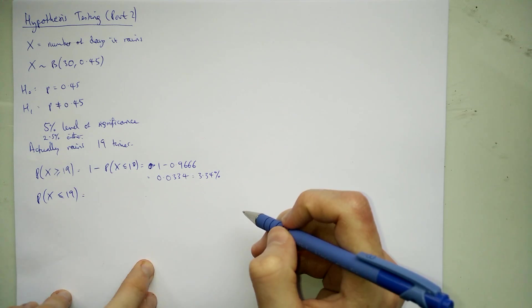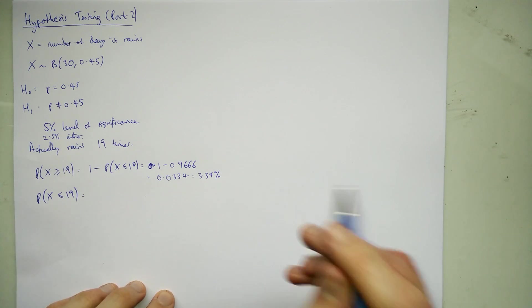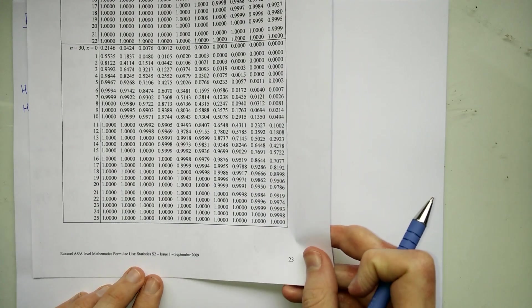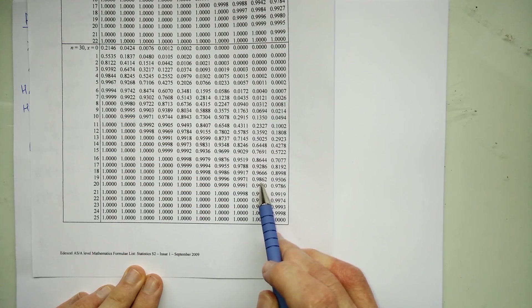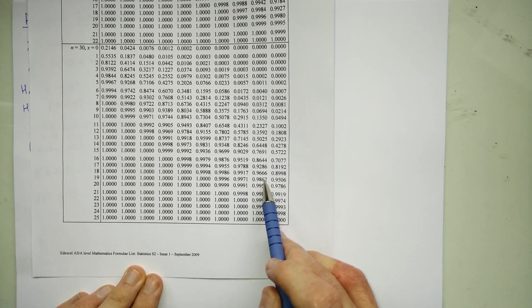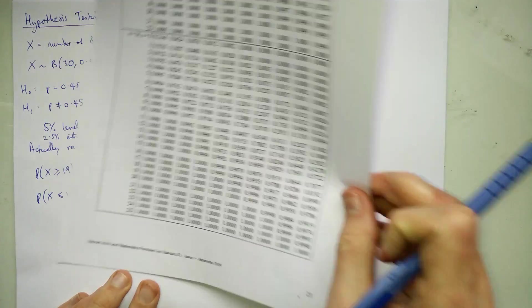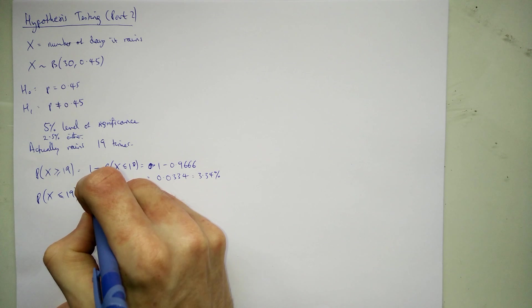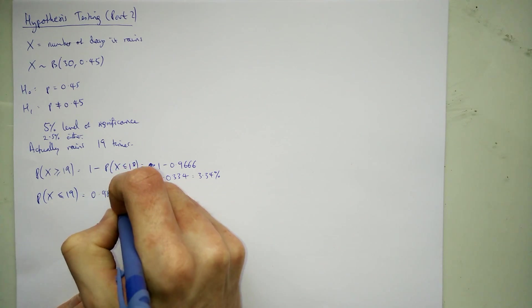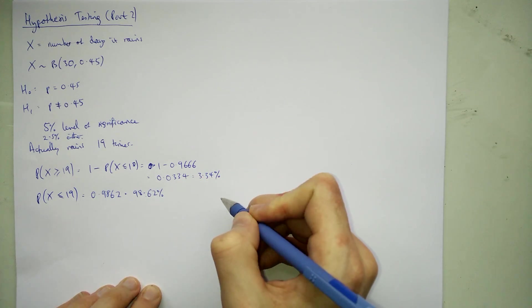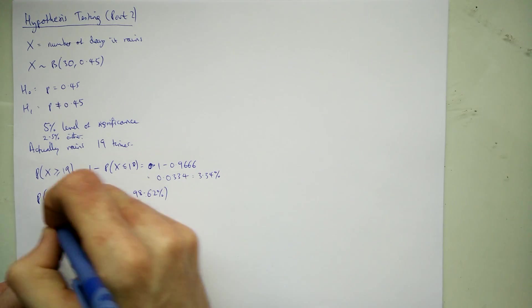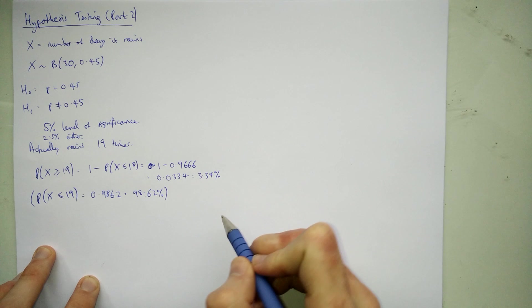More likely then that probability is 0.45 and we've got less than 19 because less than 19 is a straight look up. Back to the table. N is 30 down to 19 across to 0.45 and 19 is 0.9862. So in practice we probably won't do this one because we wouldn't need to look up a 98% chance. So that one is not important. We look at the smallest percentage.